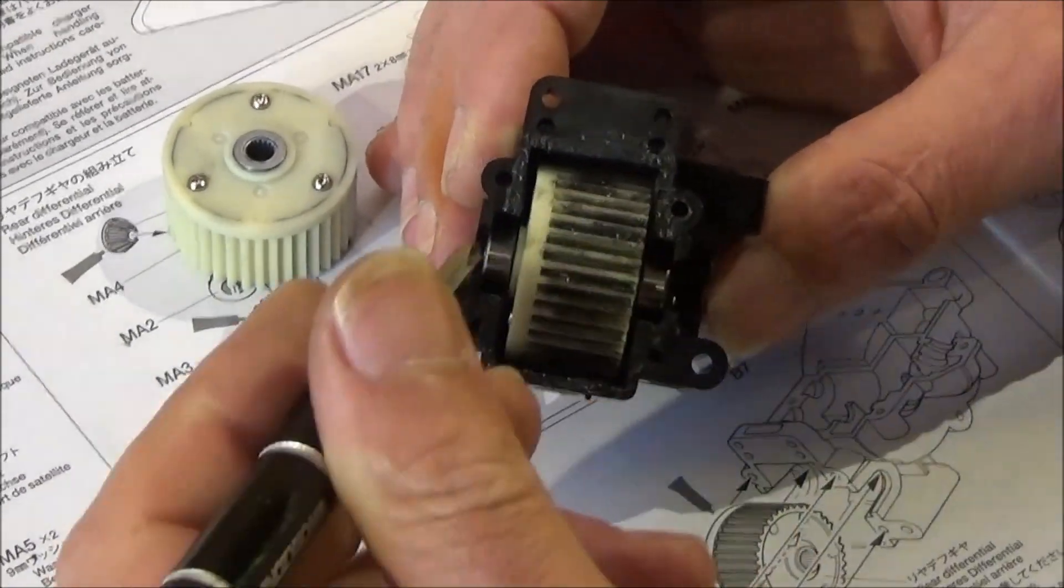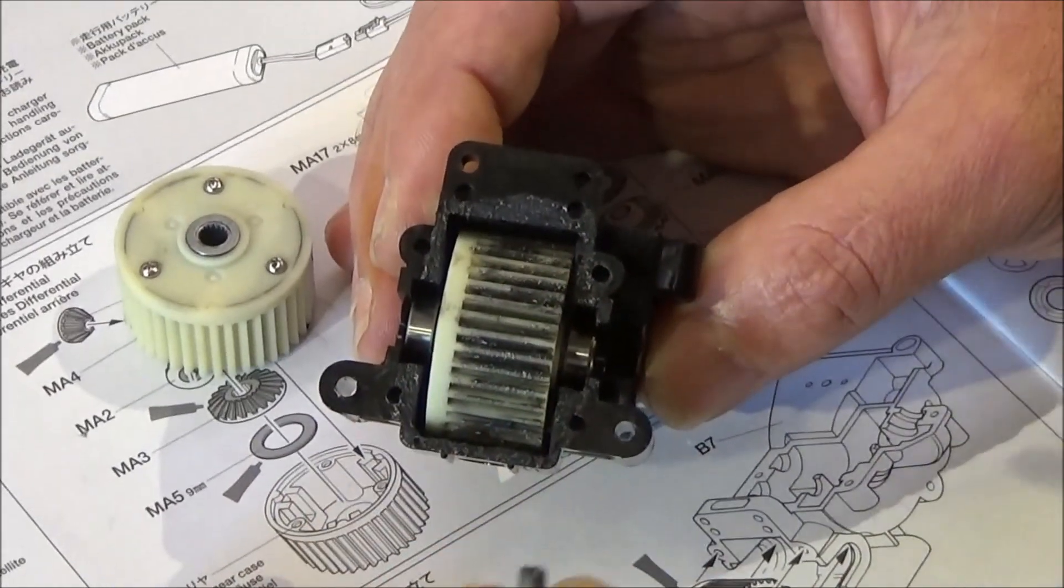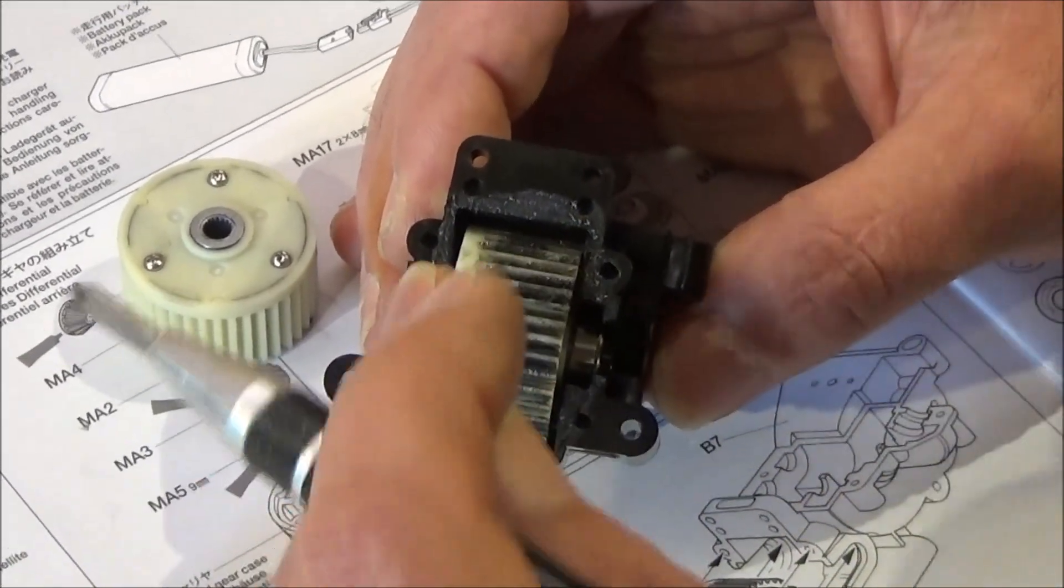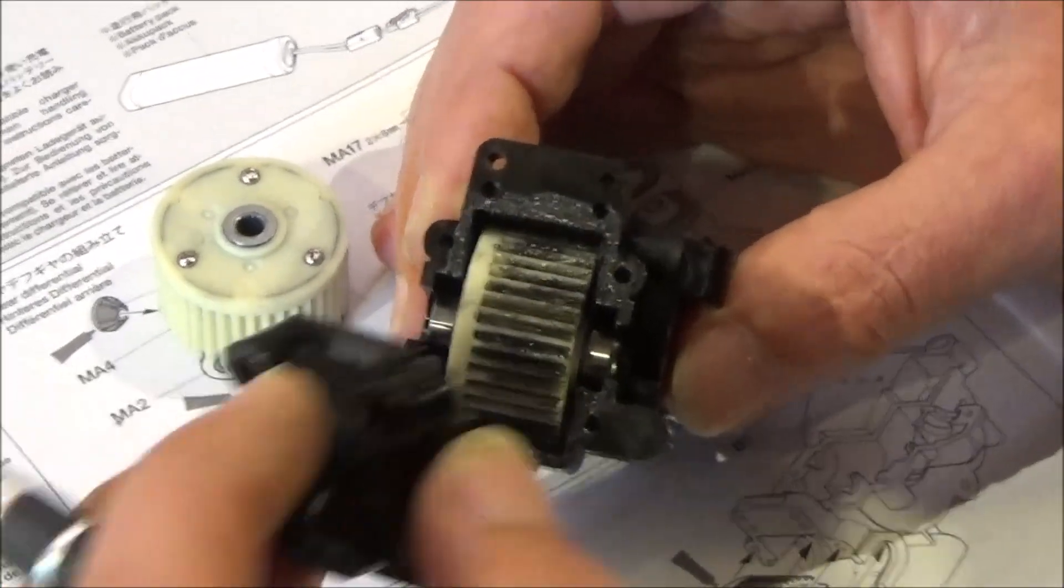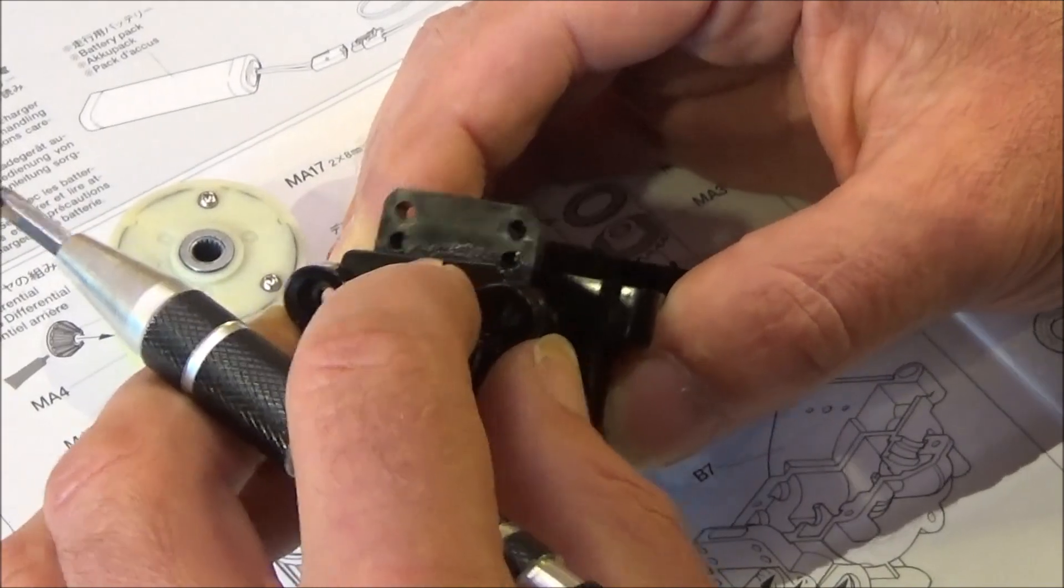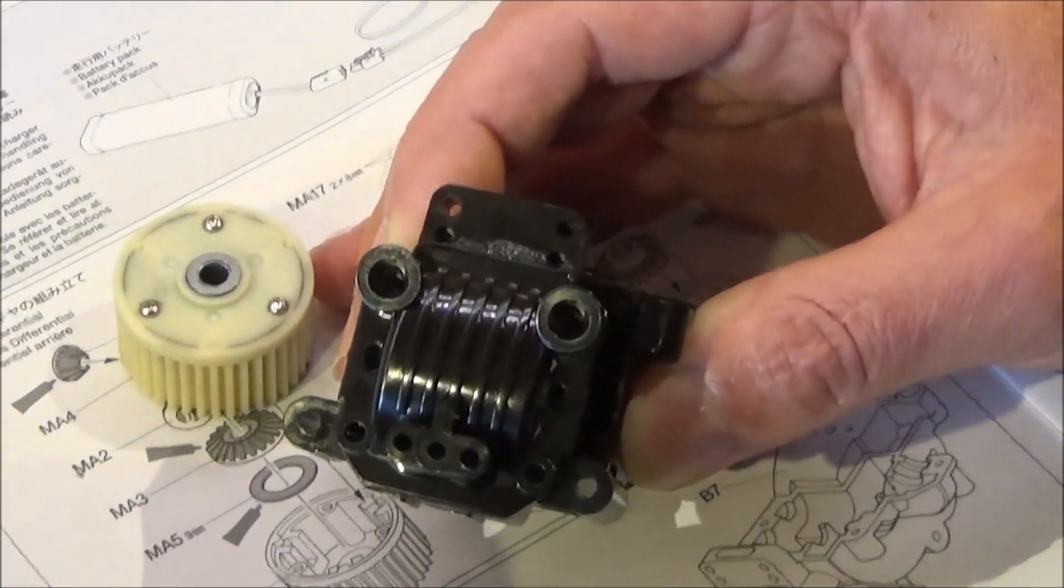And screw the back on with the four 3mm screws. I've just put a little bit of grease on the mating surfaces there just to hopefully stop any fine dust getting into the housing. So on this goes, and we'll just put the screws in.